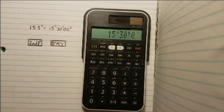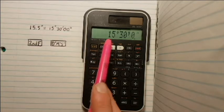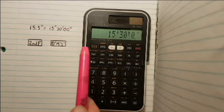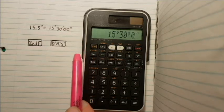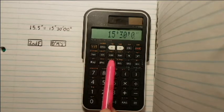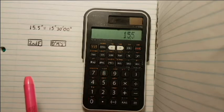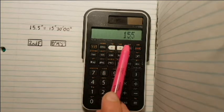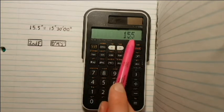This also works in reverse. If we want to convert our 15 degrees, 30 minutes, 0 seconds back to decimal degrees, we press Second Function DMS again and our number is converted back to 15.5 decimal degrees.